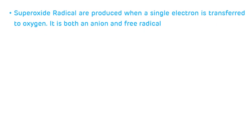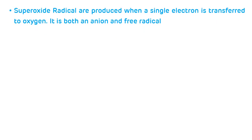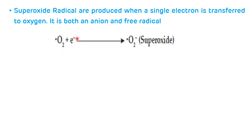If there is an incomplete reduction process, it leads to the synthesis of various free radicals and reactive oxygen species. First, if one electron is transferred to oxygen, it leads to the synthesis of superoxide radical, which is both an anion and a free radical.